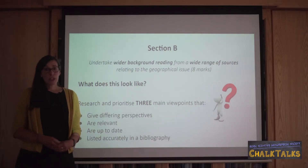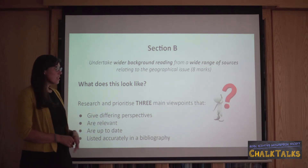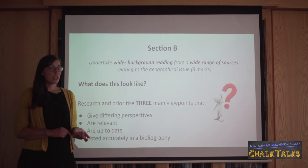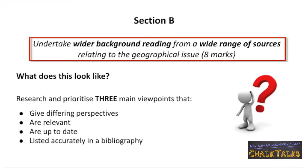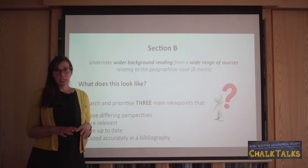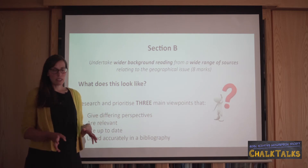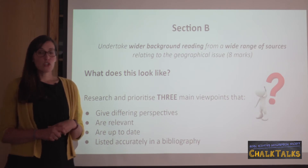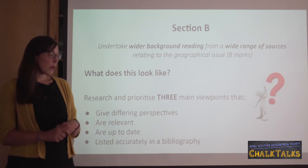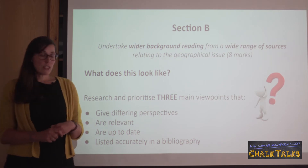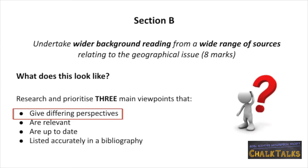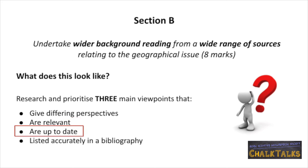Section B is all about your wider background reading. This includes the three main viewpoints mentioned earlier, but also the whole range of sources that you have identified for your chosen topic. This section is worth eight marks and they will be allocated where they are seen within the essay itself. That means getting different perspectives on the geographical issue you have chosen, making sure that they are relevant, up-to-date, and that you have included them in your bibliography.